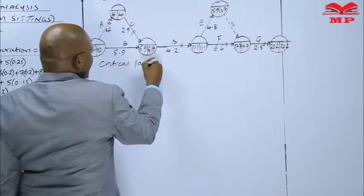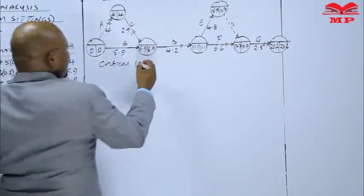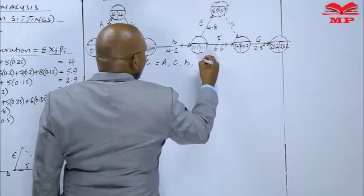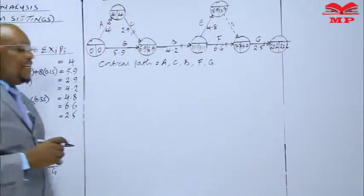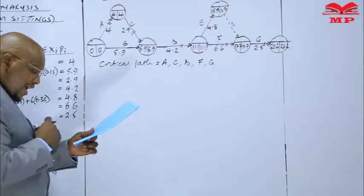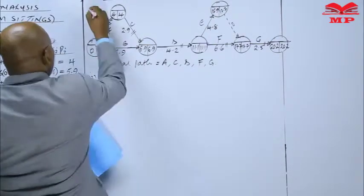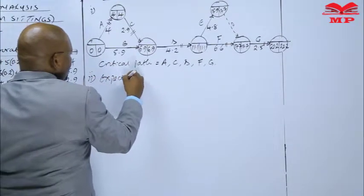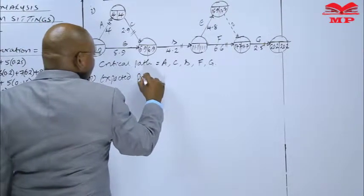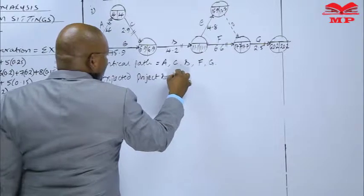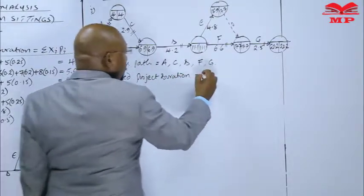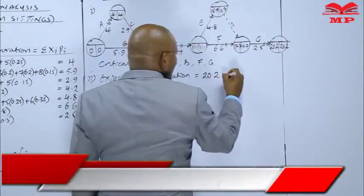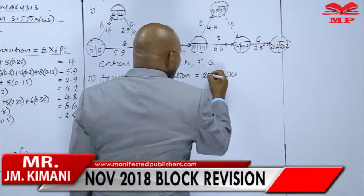So we can now say that critical path, this is actually A, C, D, F, G. Well, now we were asked Roman 2. Roman 2 you are asked the expected duration of the project. This is expected project duration. This is actually 20.2. Were they weeks or days? These are weeks. 20.2 weeks. Now that is how the question could have been answered.